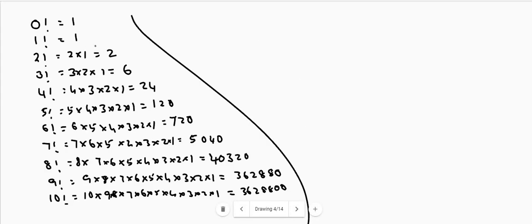Let's write the values of factorials: 0! = 1, 1! = 1, 2! = 2 × 1 = 2, 3! = 3 × 2 × 1 = 6, and 4! = 1 × 2 × 3 × 4 = 24. These can be written in any order — 4 × 3 × 2 × 1 is the same as 1 × 2 × 3 × 4, giving 24.